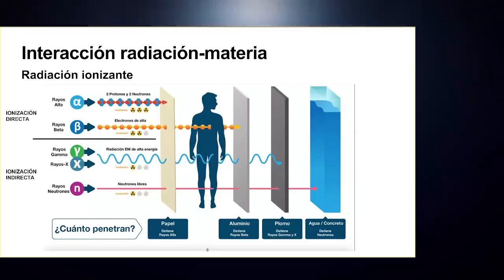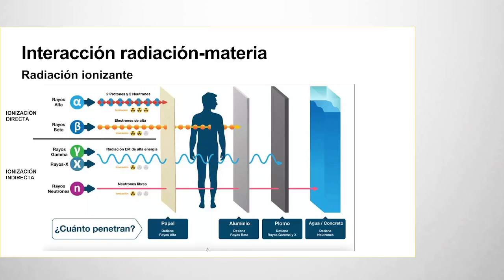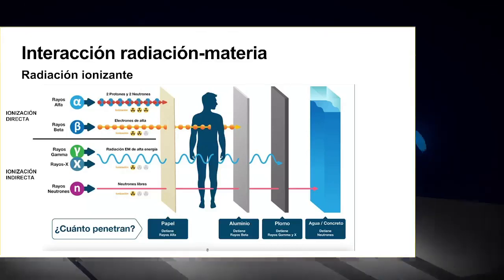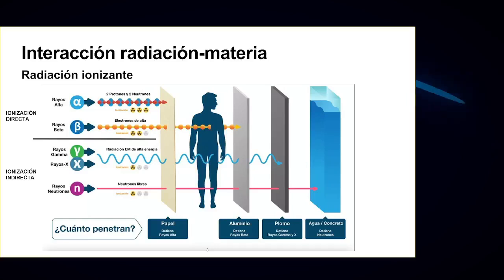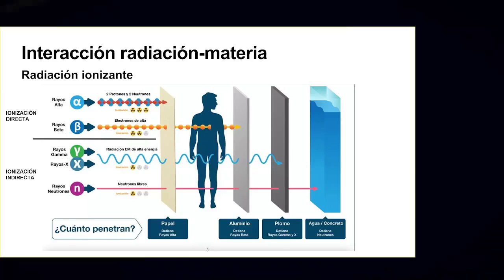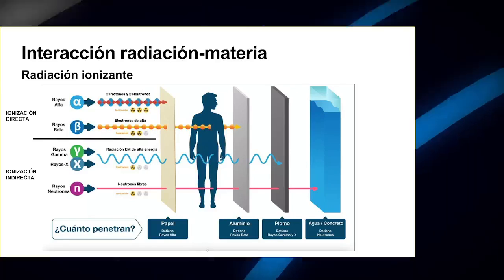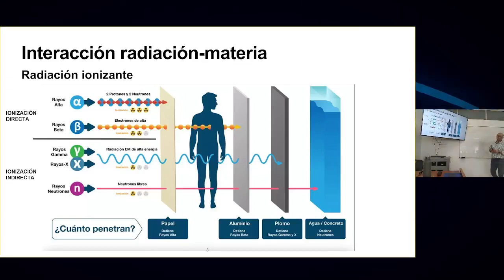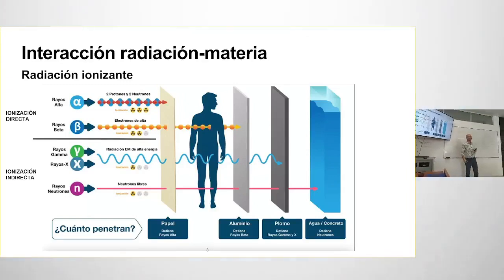The third term in the title is radiation-matter interaction. This is a general introduction to ionizing radiation, which is the type that interests us. Non-ionizing radiation lacks the energy to remove electrons from matter — it cannot ionize atoms. Ionizing radiation, typically above 10 keV, can ionize atoms or molecules of the material being irradiated.